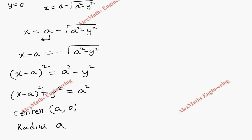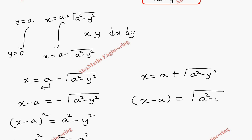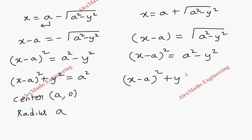In the same way, let's work out the upper limit: x equals a plus root of (a squared minus y squared). Taking a to the side gives x minus a equals root of (a squared minus y squared). Squaring both sides gives (x minus a) squared equals a squared minus y squared. Taking y squared to the other side gives (x minus a) squared plus y squared equals a squared — once again the same equation.